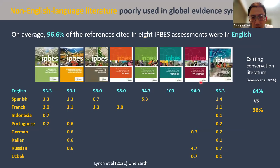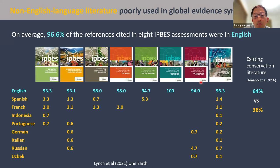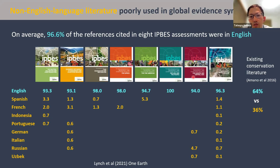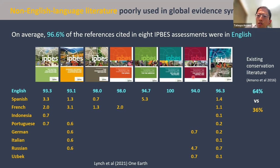Most of the existing non-English language literature is not being used in global-level evidence synthesis. In this study, we looked at the proportion of references cited in eight IPBES assessments on biodiversity by language. The IPBES is the biodiversity version of the IPCC. Not surprisingly, English language references dominate in most assessments, with on average 96% of the references cited being in English. This is in clear contrast to the result that 36% of existing conservation literature was actually written in non-English languages.